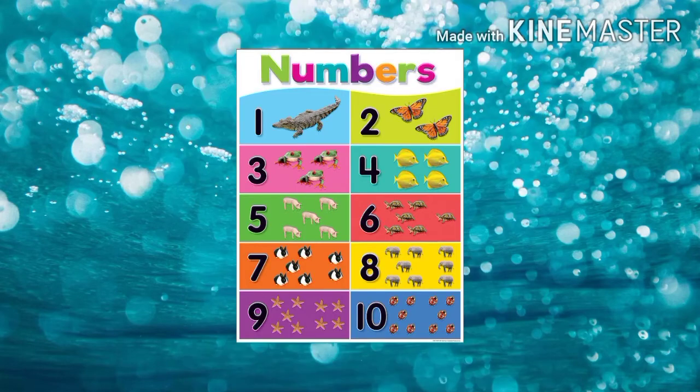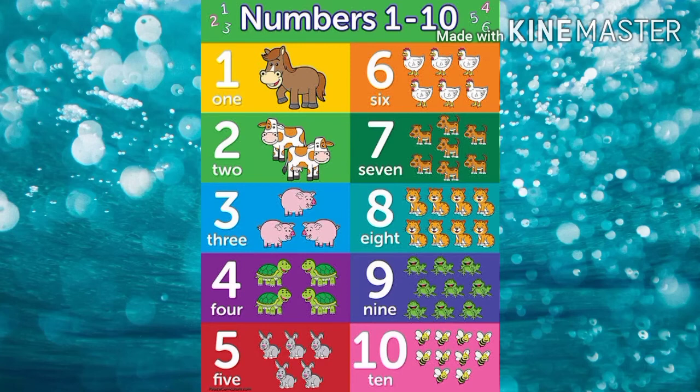Here is another example. 1 crocodile, 2 butterflies, then 4 fishes. Again look here — you can see 8 cats, 9 frogs like that. Just count those numbers and compare with the objects. You can identify that those numbers and objects are the same.